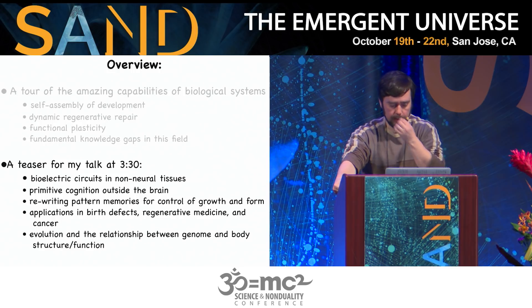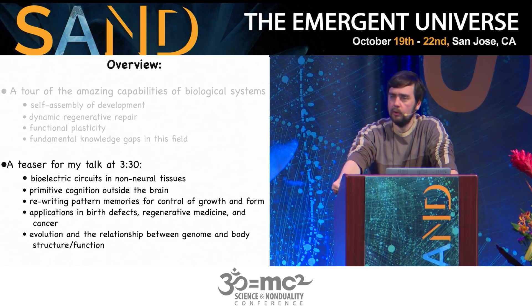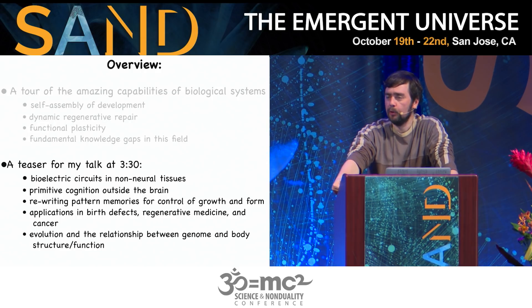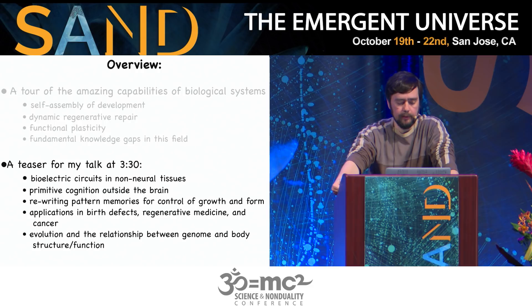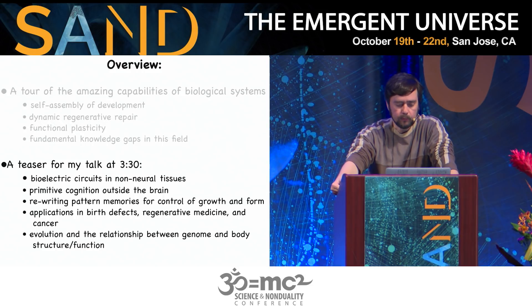In just the last few minutes I want to preview what I'll discuss in detail downstairs at 3:30. All cells — not just nerve and muscle — communicate electrically. There are natural bioelectrical circuits throughout the body. One thing these circuits do is implement a kind of primitive cognition: they make decisions. Rewiring these electrical circuits can give really remarkable results in the control of growth and form, with applications in birth defects, regenerative medicine, and cancer. This also has implications for understanding evolution and the relationship between the genome and the body.